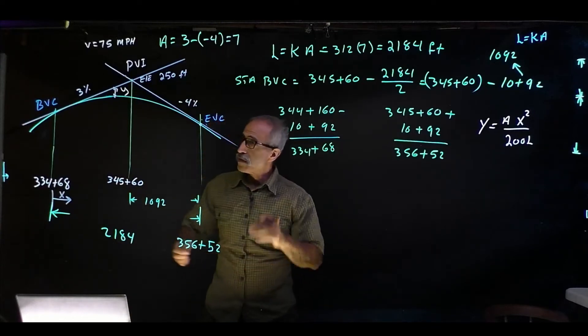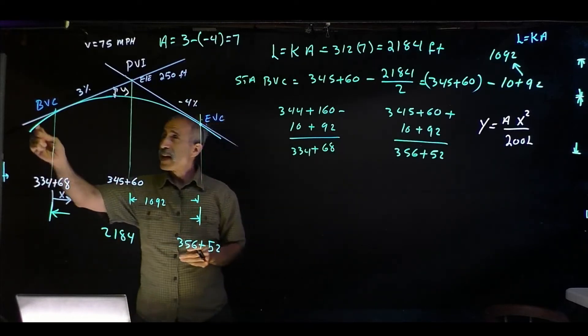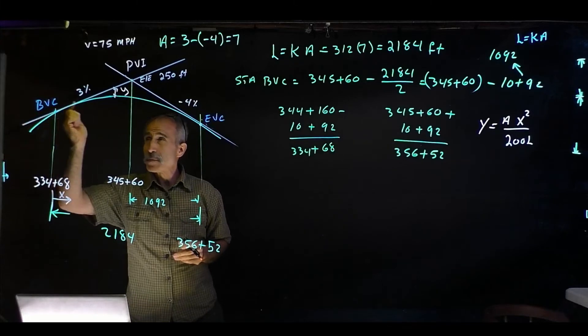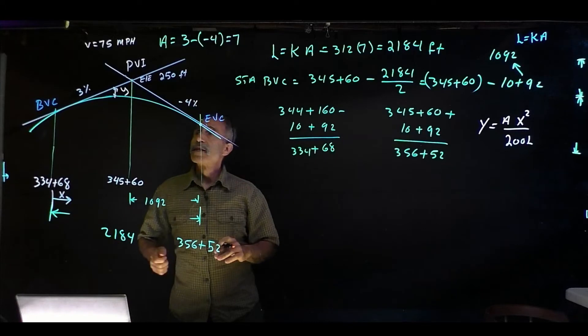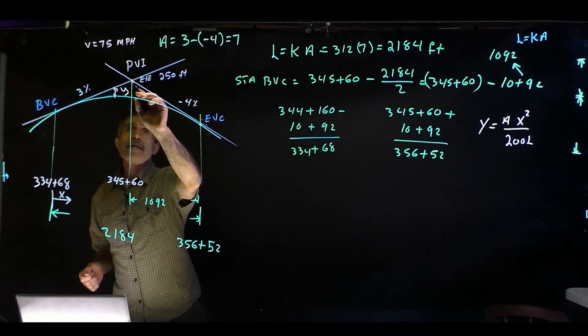So let's first find out what is the elevation, tangent elevation at X equals 0, which is BVC right here.